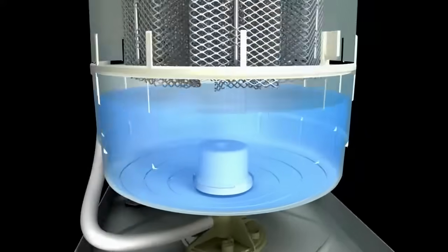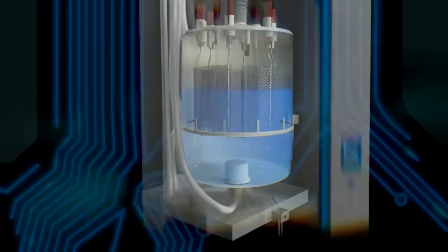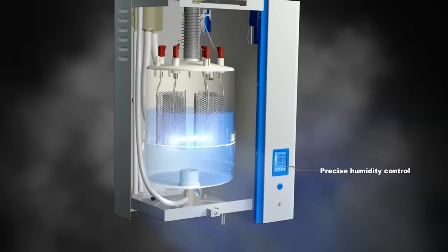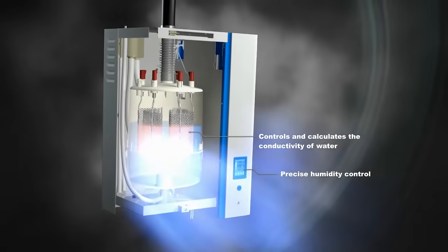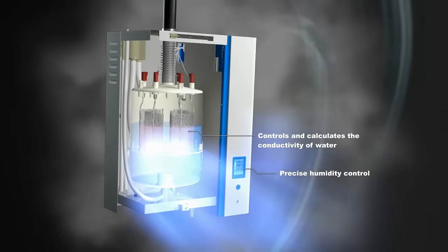Electric current flows through the water according to its conductivity. The controller routinely monitors the water conductivity and regulates steam production by optimizing water feed to the steam cylinder.